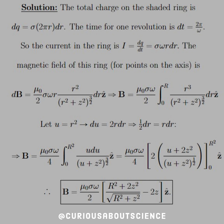So we end up with sigma omega r dr. The magnetic field of the ring for points on the z-axis is defined by dB equals mu naught over 2 sigma omega r times the factor here of r squared over r squared plus z squared to the three halves dr z hat. Integrate this to find the field.